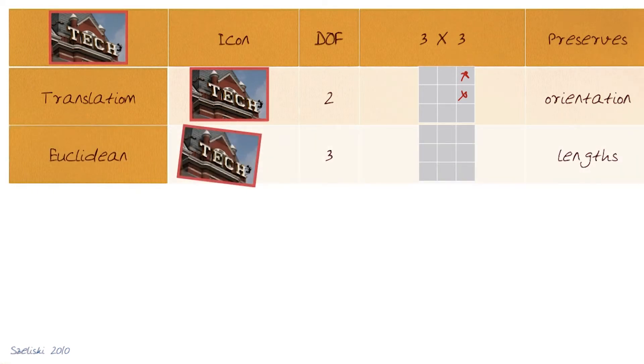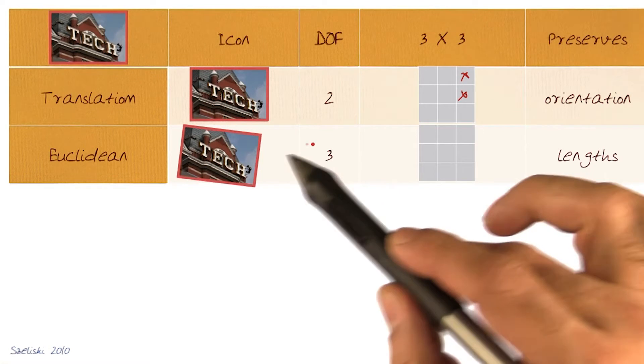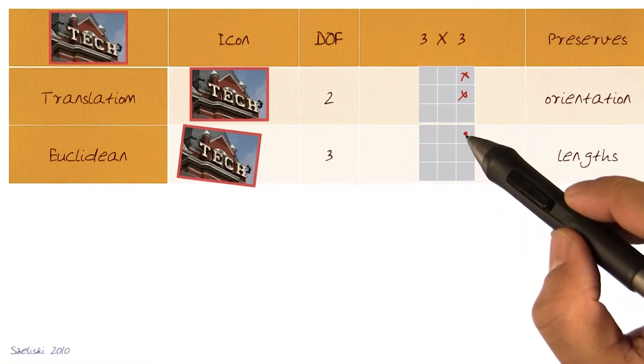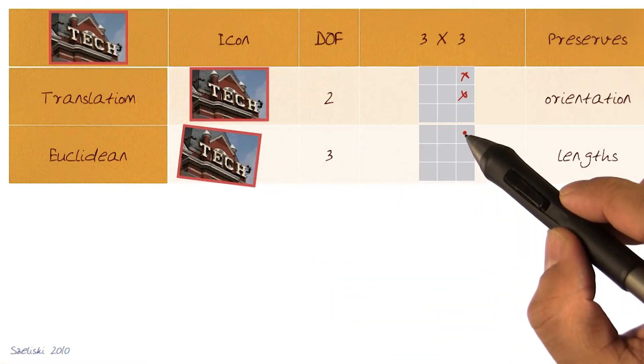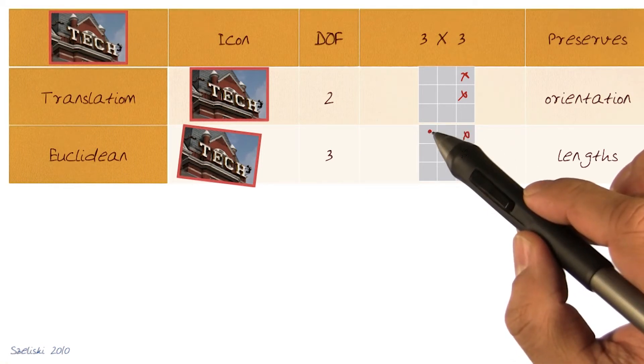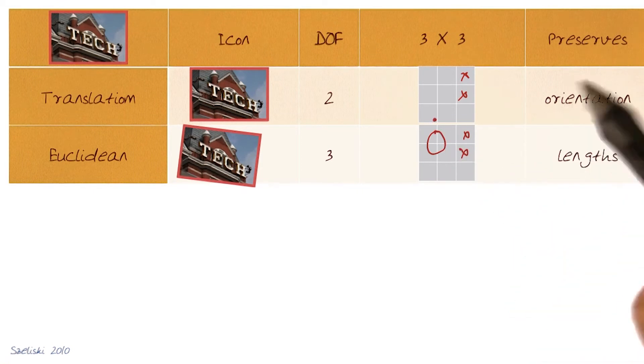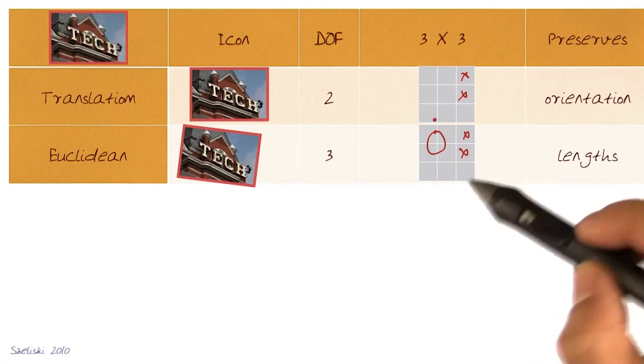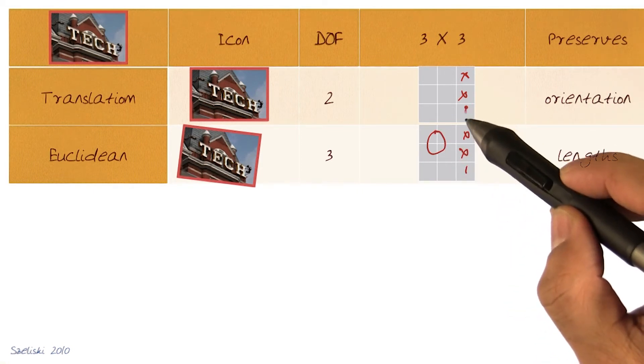Case of Euclidean where there is a rigid transformation, three degrees of freedom, the object is rotated. Here, we would change if there's translation involved, even these two values, but also the cosine theta and stuff like that would change these four values here too. This would still remain one as it is here.